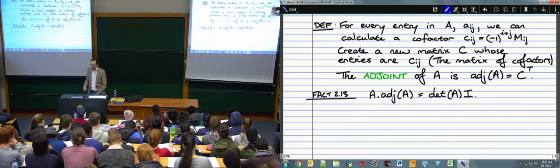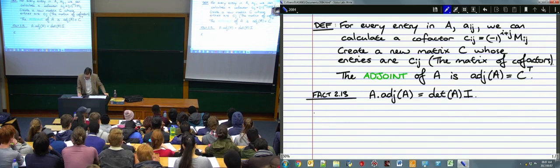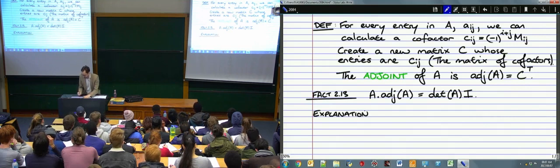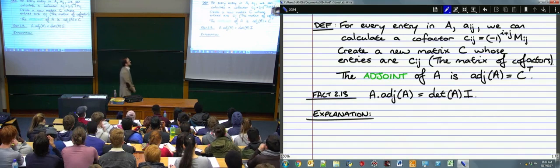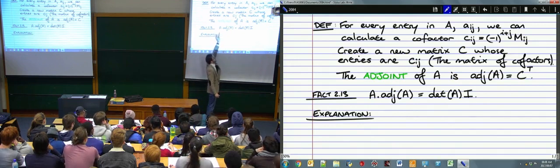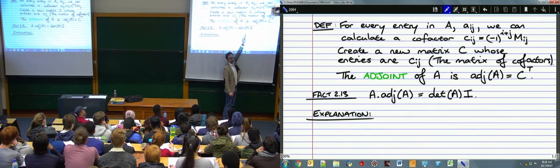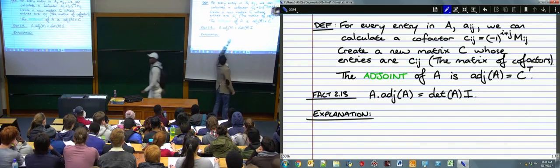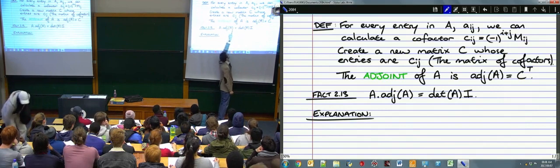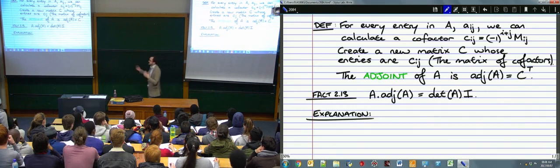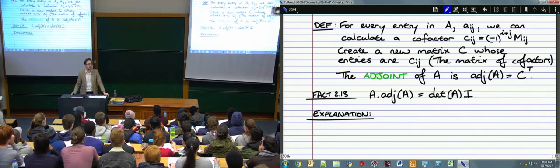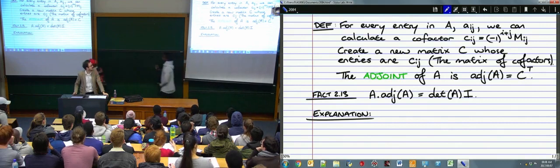Let's try to understand Fact 2.13. It's useful because if A is invertible, then det(A) is non-zero, so you can divide through by det(A) and get that A multiplied by (1/det(A)) times the adjoint equals the identity. So (1/det(A)) × adj(A) is your inverse — it gives another way of calculating inverses, though in practice just do Gauss reduction.